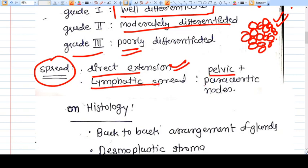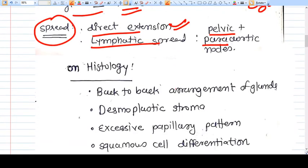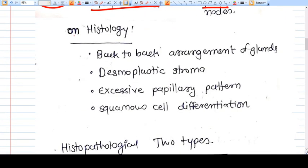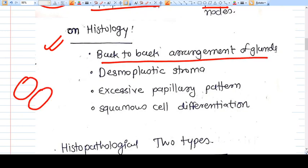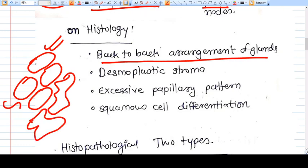Now on histology, if you see back-to-back arrangement of glands is seen. For example, if the stroma is there - if you have seen my previous video on endometrial hyperplasia - the back-to-back glands are seen. There is very little stroma.